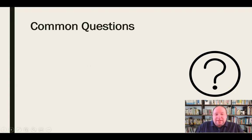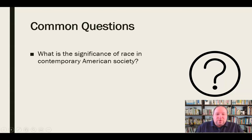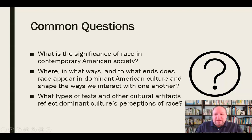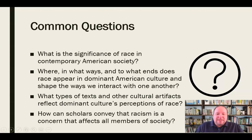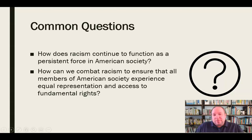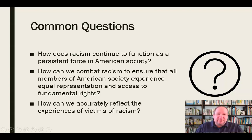Some common questions that come up as we explore critical race theory: What is the significance of race in contemporary American society? In what ways and to what ends does race appear in dominant American culture and shape the ways we interact with one another? What types of texts and cultural artifacts reflect dominant culture's perceptions of race? How can scholars convey that racism affects all members of society? How does racism continue to function as a persistent force? How can we combat racism to ensure equal representation and access to fundamental rights?